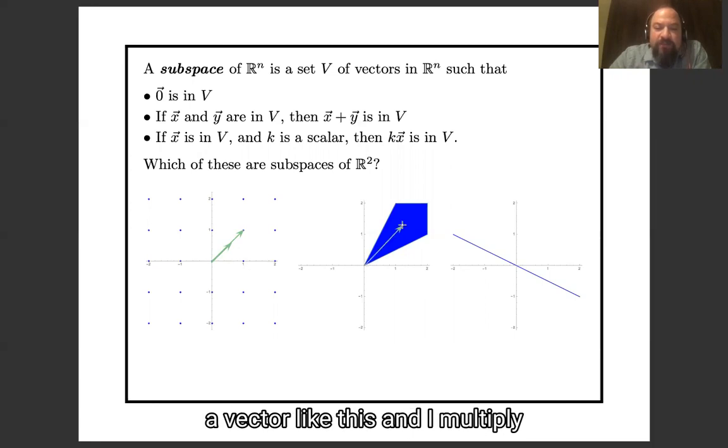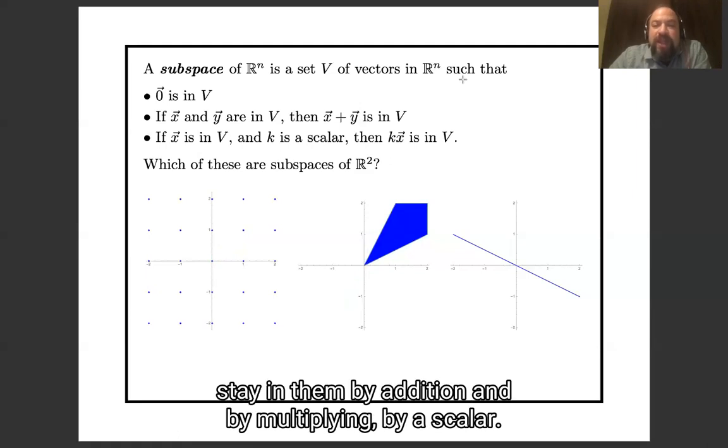And similarly here, if I take a vector like this and I multiply it by a scalar like negative one, to get a vector over here, I've left the blue subspace. So, subspaces are things where you stay in them by addition and by multiplying by a scalar.